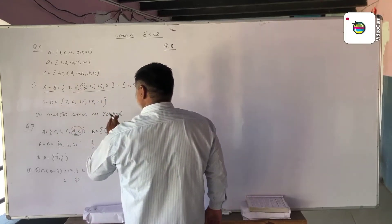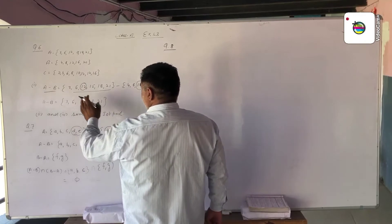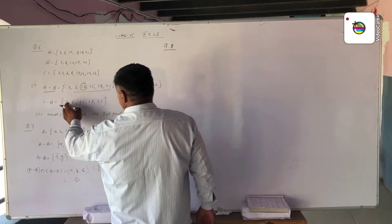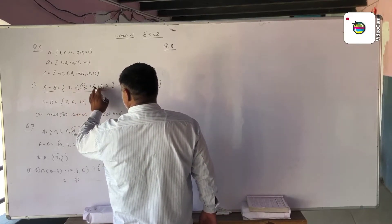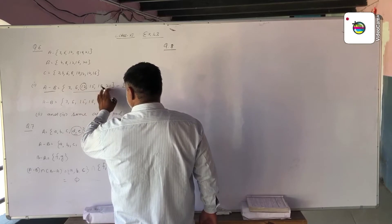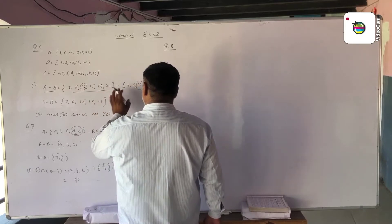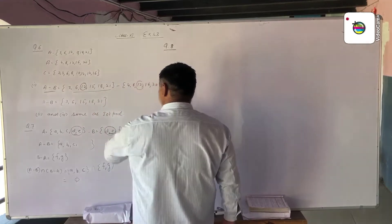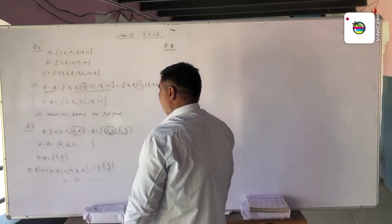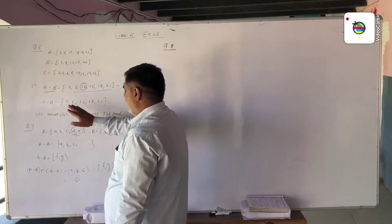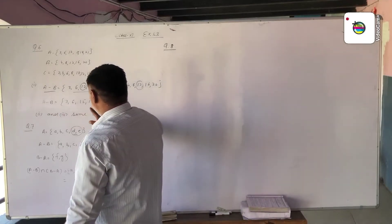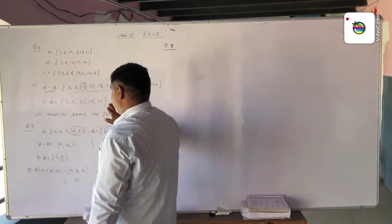The remaining elements of A are 3, 6, 15, 18, 21. We note that these are not elements of B. So this is the A difference B set.